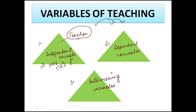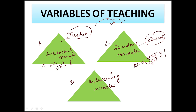The dependent variable is obviously the students. Students who are learning — teachers are independent, and students are the dependent variable — because students have to work actively according to the planning system and presentations given by the teacher in the teaching process. The dependent variable is the result of independent variables.